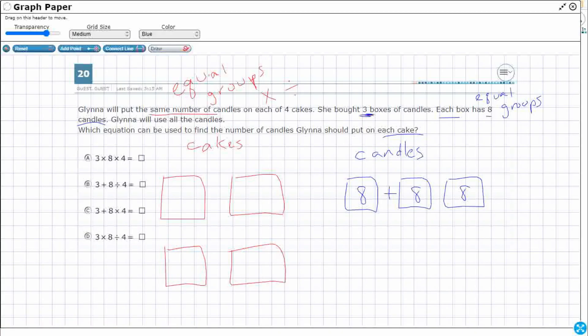Let's just add this up. So eight plus eight plus eight. That's 24.